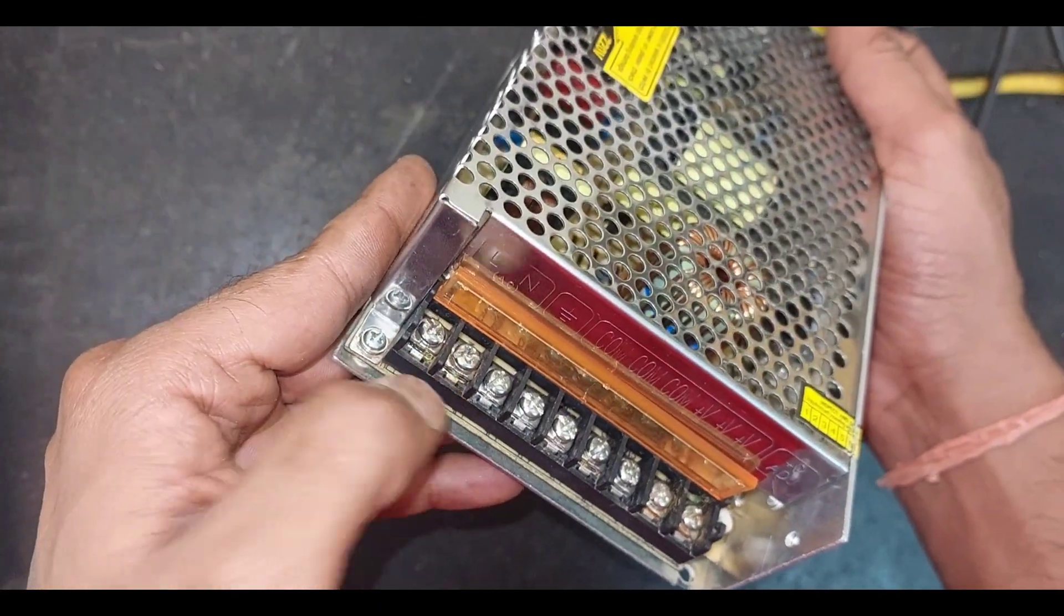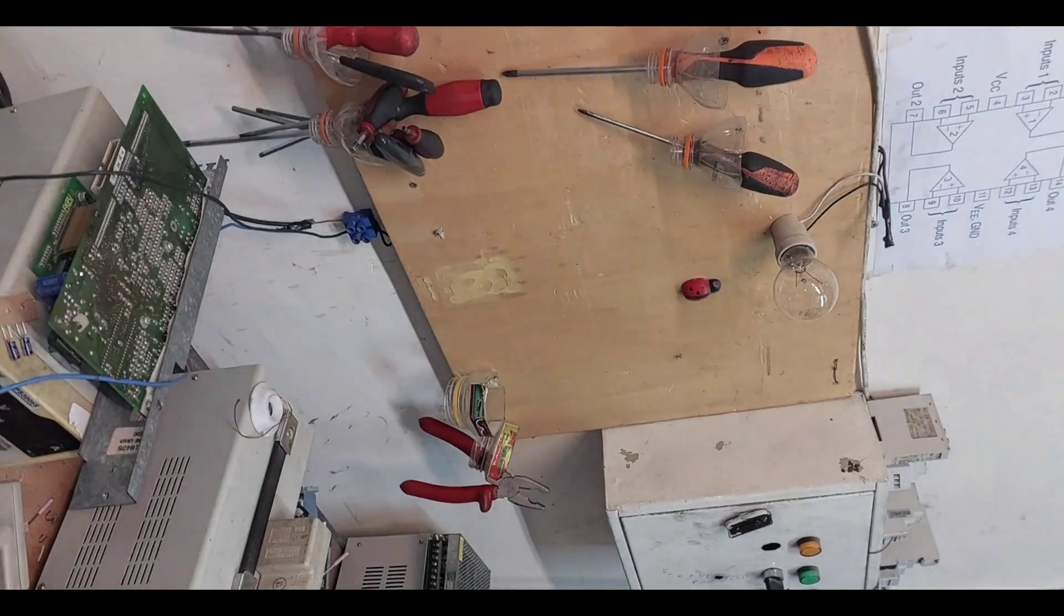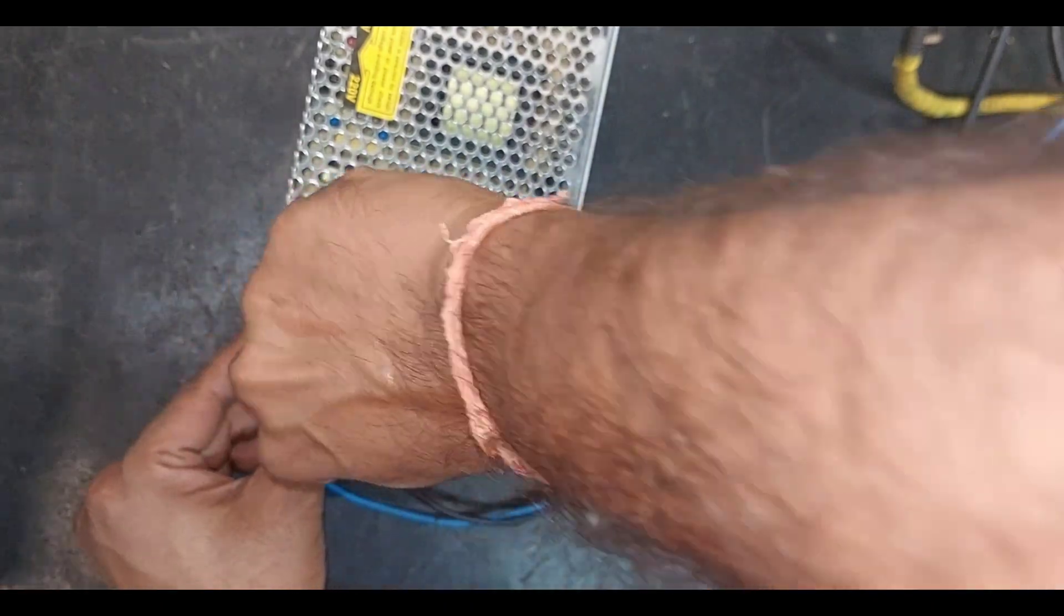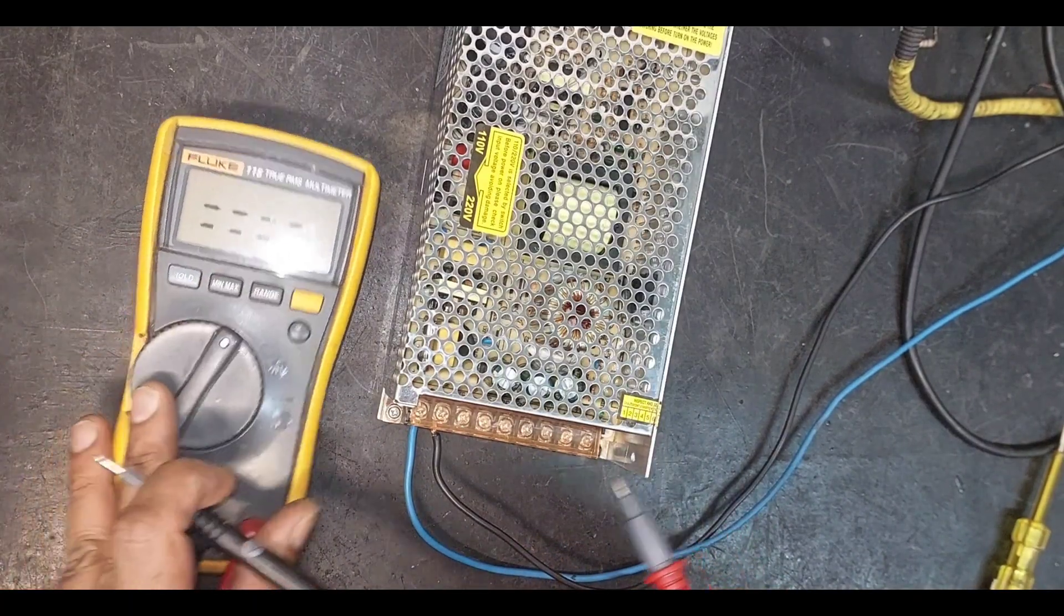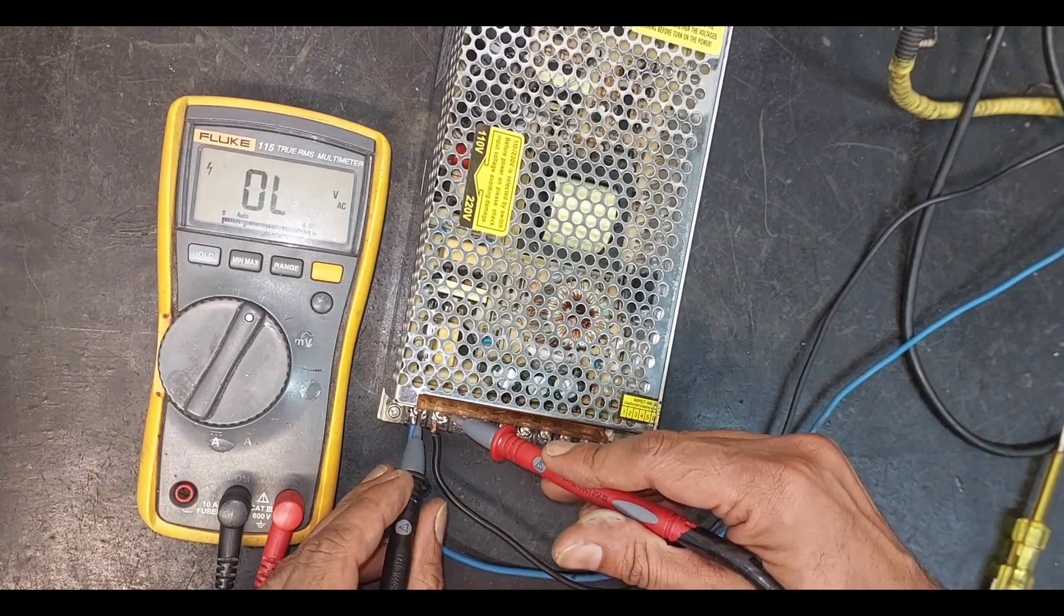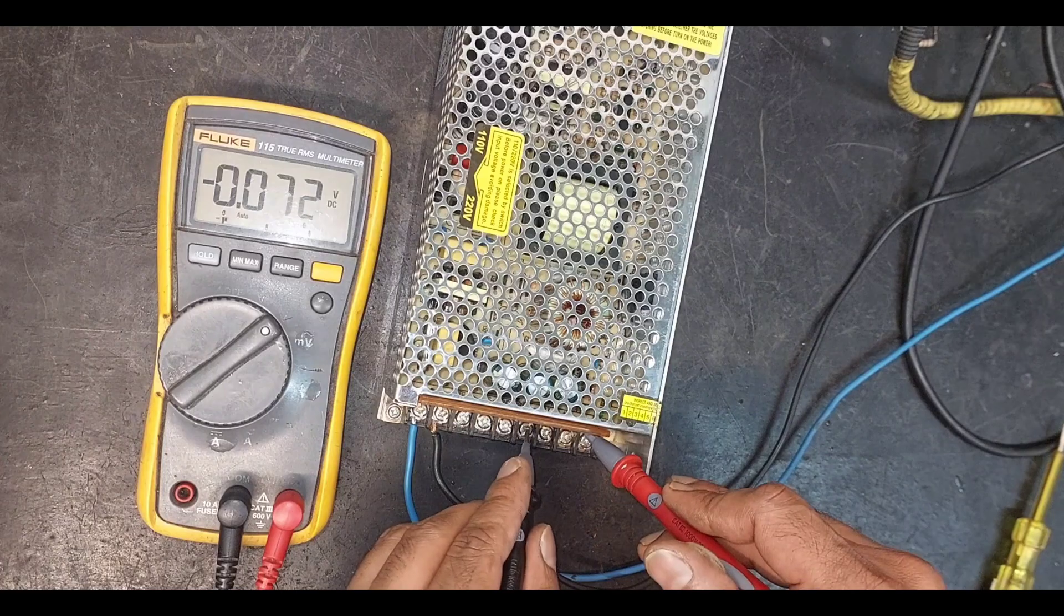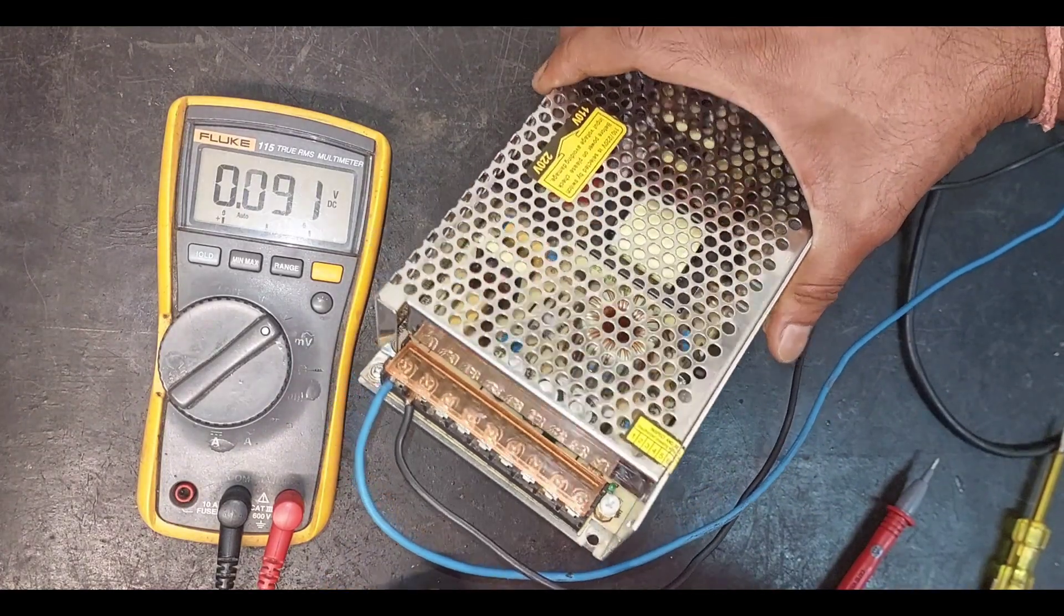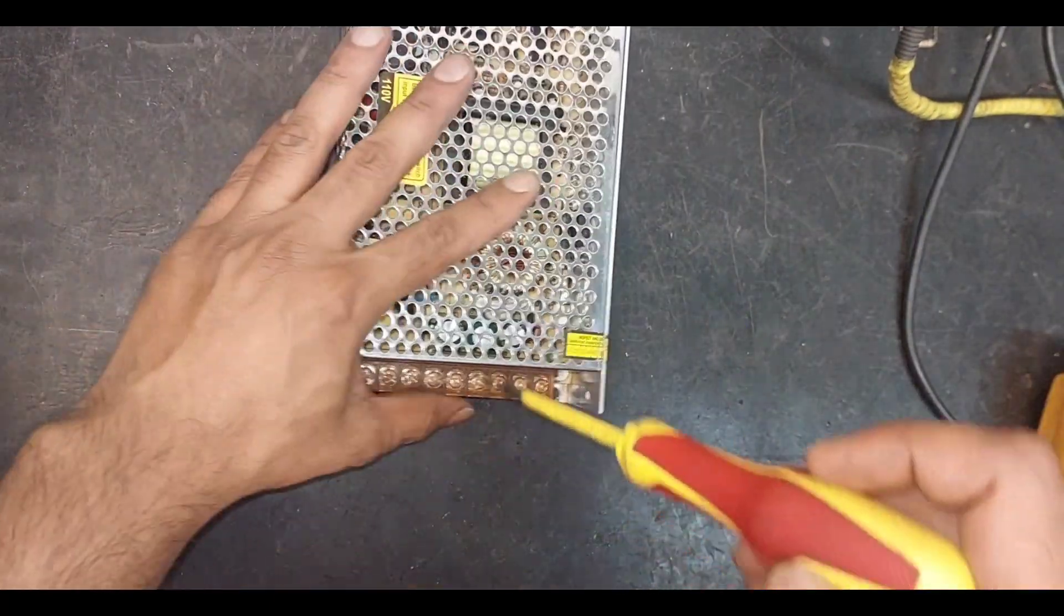Now let's connect the input and see what happens. For the input we will use a series lamp so that in case of short circuit there won't be any problem. Let's connect 220 volt AC to it. We have already connected the input, let's check it with a multimeter. The input is showing 226 volt and the output is showing 0 volt. Additionally, the green color LED is not glowing, so let's proceed to open it.